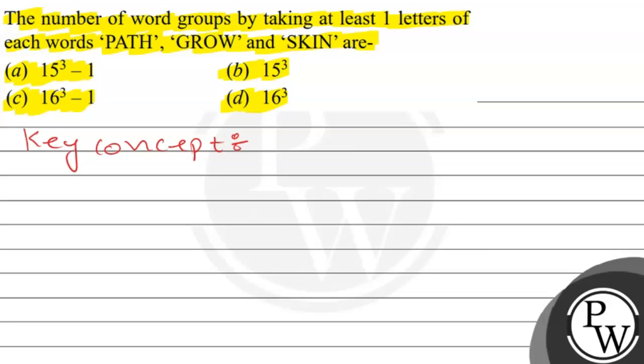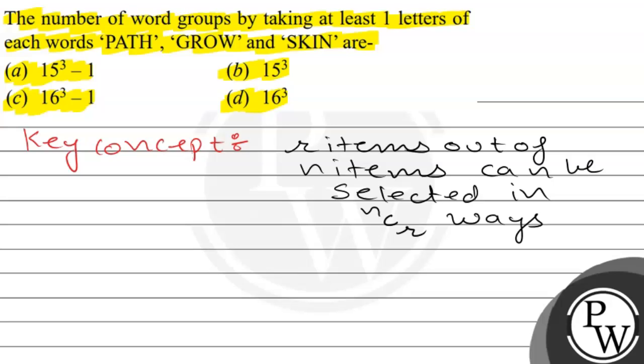Our key concept is that n items out of n items can be selected in nCr ways.